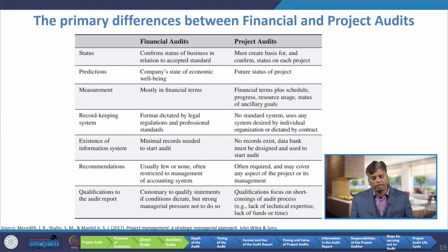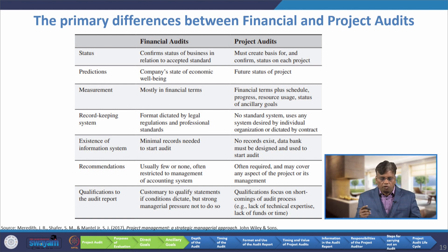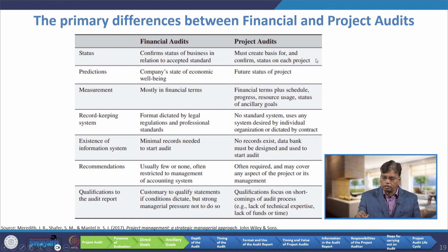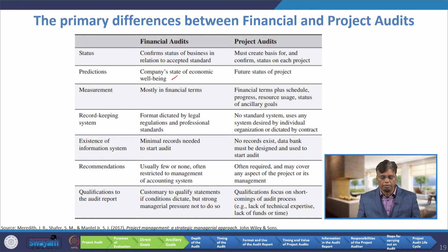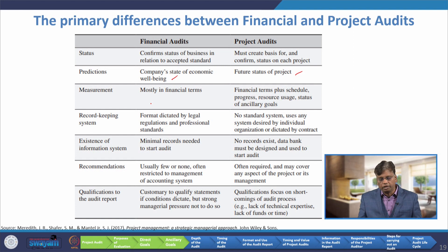This table compares the differences between financial and project audit. With respect to status, financial audit confirms the status of the business in relation to accepted standards, but project audits must create a basis for and confirm the status of the project. With respect to predictions, financial audit predicts the company's state of economic well-being, but project audit predicts the future status of the project. With respect to measurement, financial audit measures only in financial terms, but project audit measures financial terms plus schedule, progress, resource usage, and status of ancillary goals.